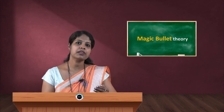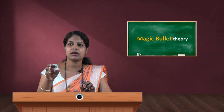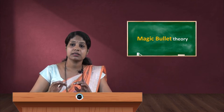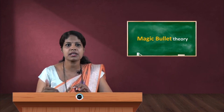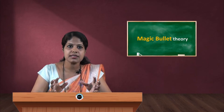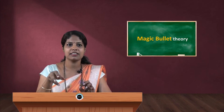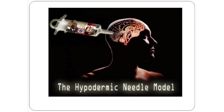This is also known as magic bullet theory, and people call it the strong effect theory. The theory is a linear model of communication and talks about media's power on the audience. Linear model means there is a one-way flow of communication from top to bottom — a vertical flow. The message is said to be like a magic bullet which enters into the minds of people and injects a message into their brains. The theory explains how media controls what the audience views and listens to, and the effect may be immediate or long-term. The word bullet and needle are used to show the powerfulness of the media as well as the powerlessness of the audience.